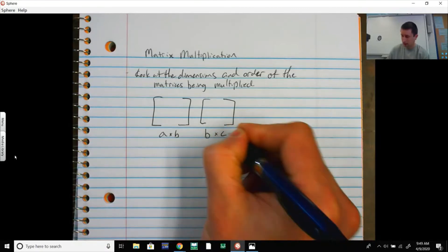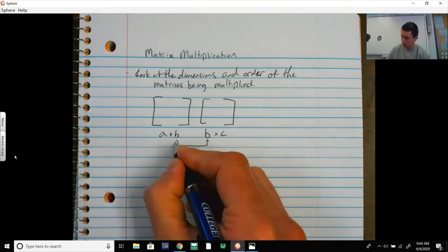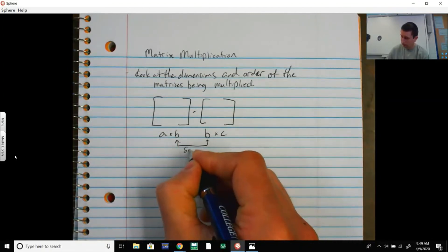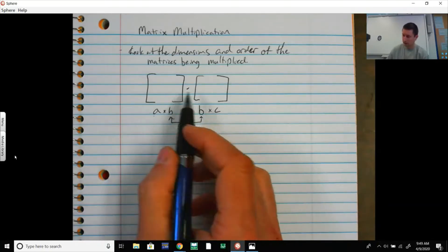These two values right here, in order to multiply these two, they have to be the same. So those two numbers have to be the same in this order.